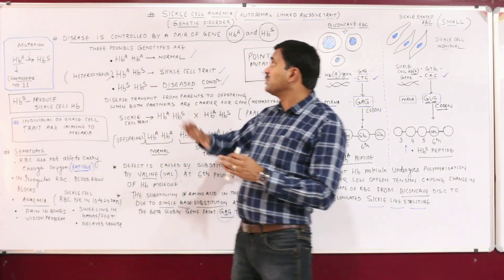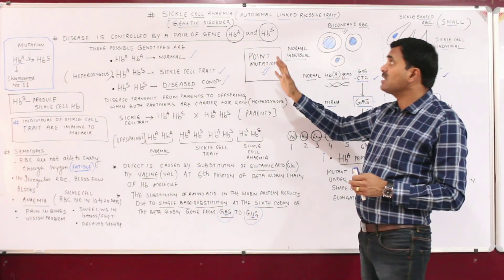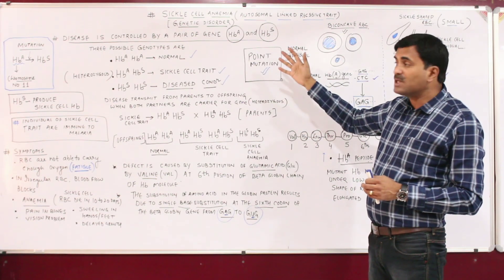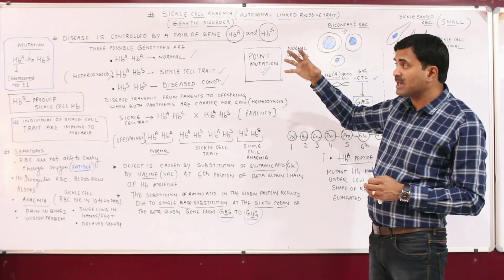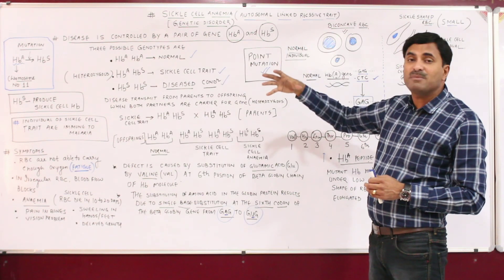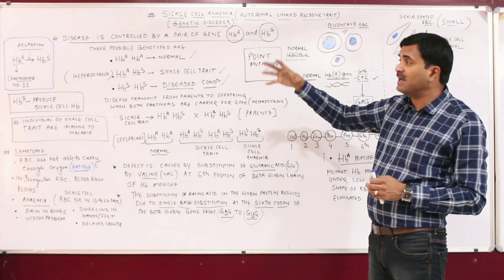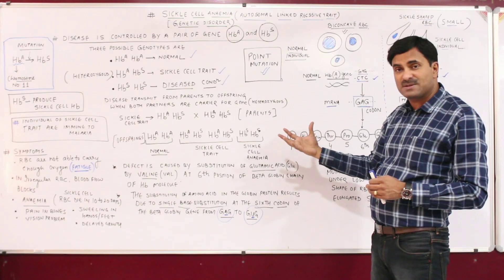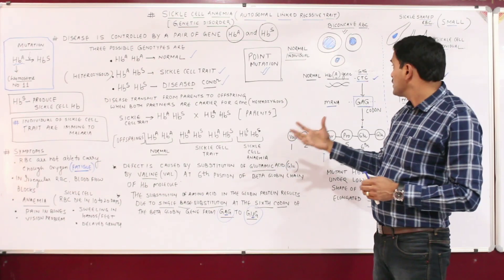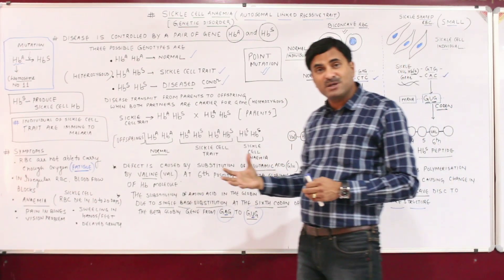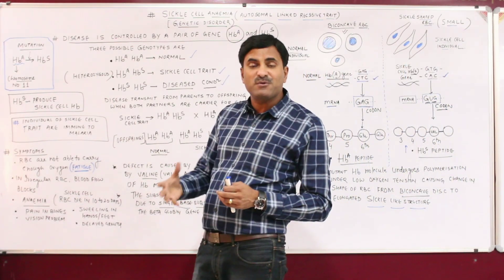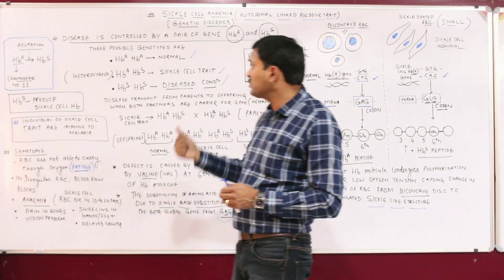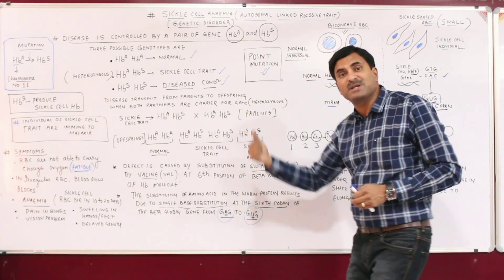To summarize: sickle cell anemia is a genetic disorder that is autosomal, related to chromosome number 11. When molecular mutation occurs and HbA converts into HbS, this problem starts. We hope you liked this video. We will be coming soon with more videos. Thank you.